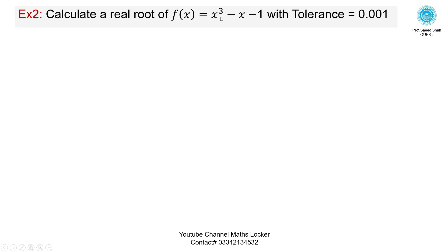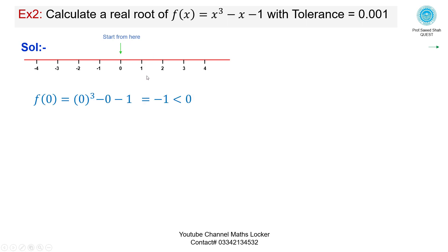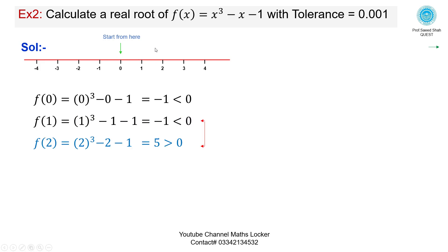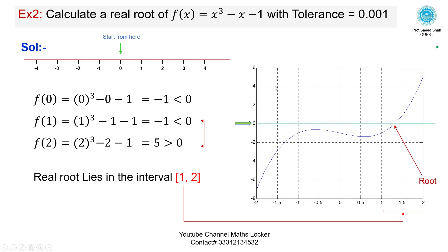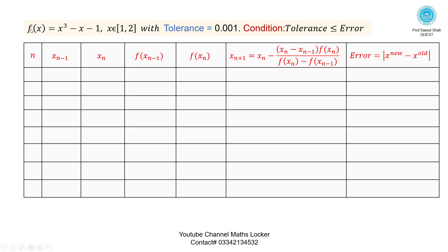Exercise 2: Calculate real root of f(x) = x² - x - 1 with tolerance 0.001. Take the number line, mark here. Putting 0: negative. Putting 1: negative. There is no change — root doesn't lie in interval [0, 1]. Take the next element 2. That means the root must lie in the interval [1, 2]. Using the graph by MATLAB, you can see where the root lies in the interval [1, 2], with tolerance 0.001. Condition: tolerance less than or equal to error.